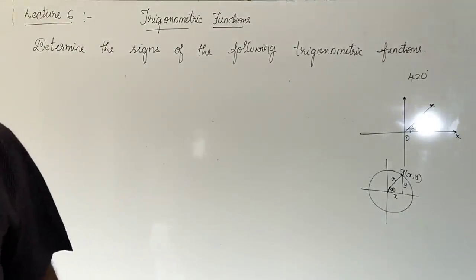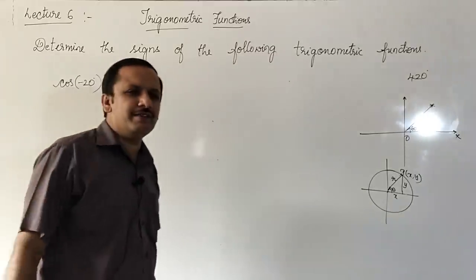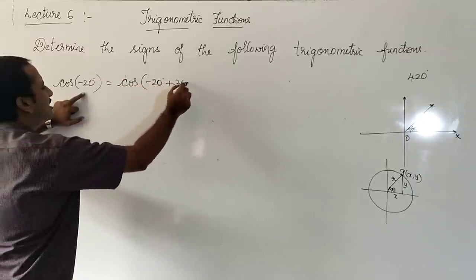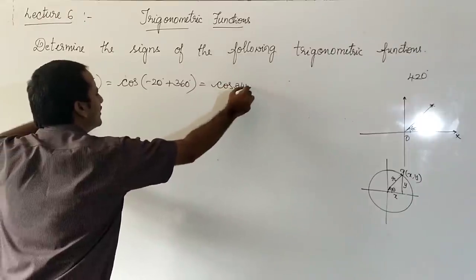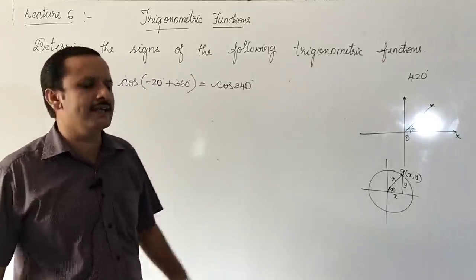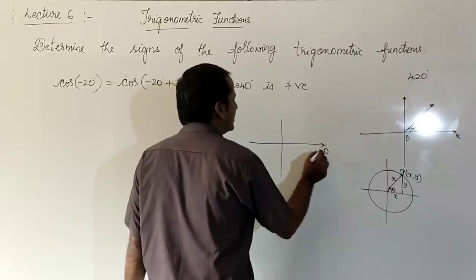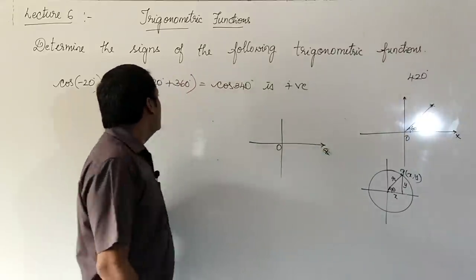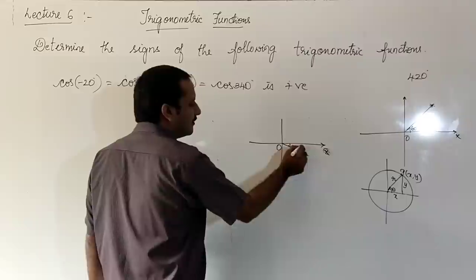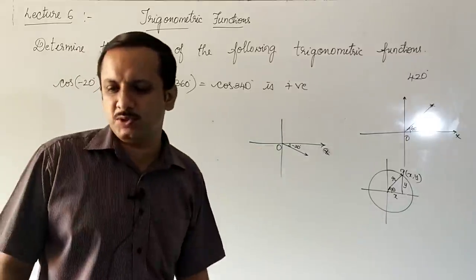Next: cos(−20 degrees). Since the angle is negative, add 360 degrees: −20 + 360 = cos 340 degrees. 340 degrees is greater than 270 but less than 360, so it is in the fourth quadrant. In the fourth quadrant cos is positive. Alternatively, measuring −20 degrees means going clockwise, which places the angle in the fourth quadrant, so cos is positive.